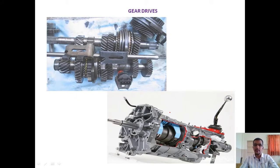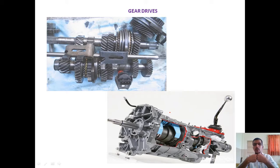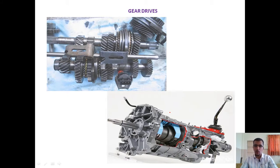Gear drives are preferred when we want to transmit power over very short distances and where both the driver and driven must be in physical contact with each other. Unlike belt drives, chain drives, or rope drives — where input and output are not in direct contact — gear drives are used when close-distance power transmission is needed. The classic example is automobile gearboxes, and gears are found in numerous daily-life applications.